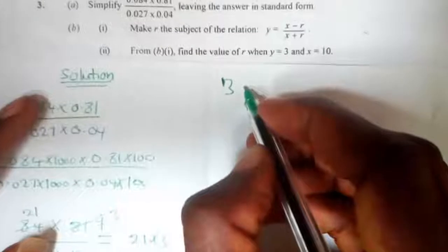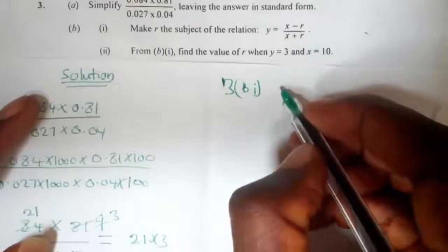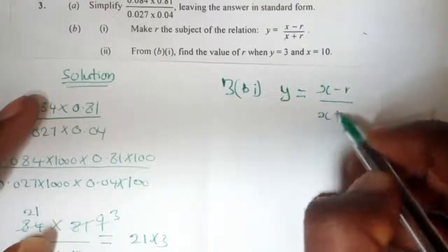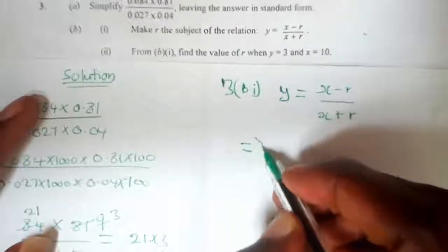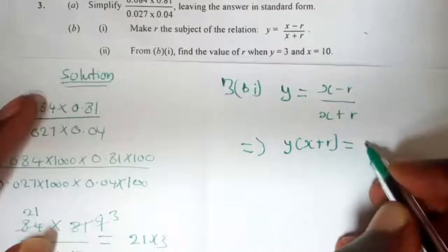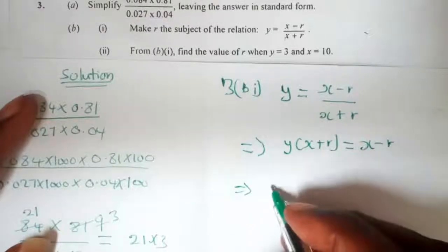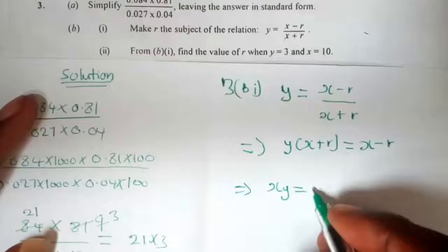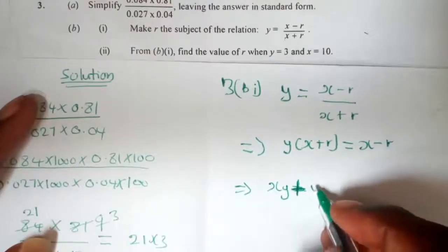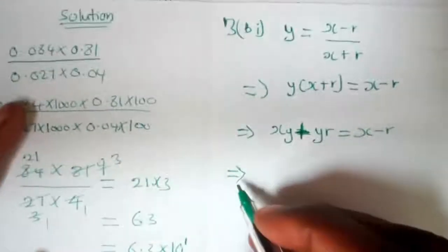For the next part, we cross multiply the expression to get y into the bracket (x plus r) equal to x minus r. We then expand to obtain xy plus yr equals x minus r.